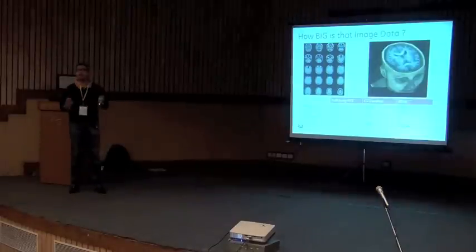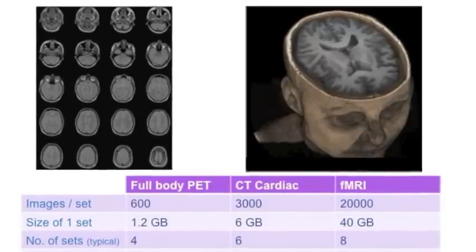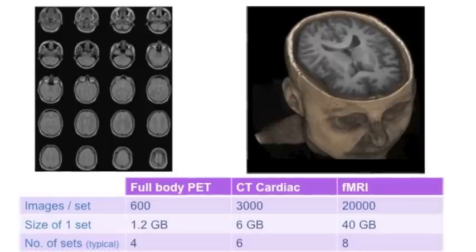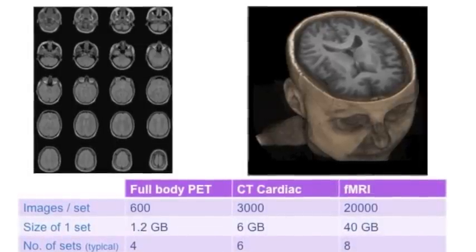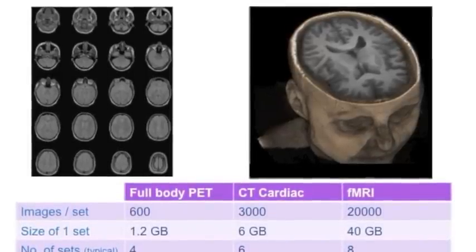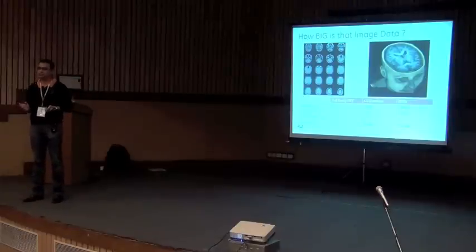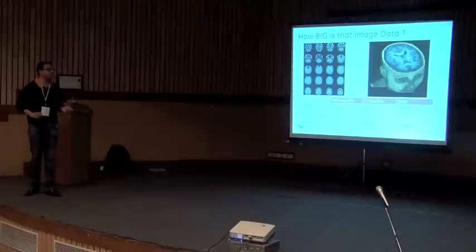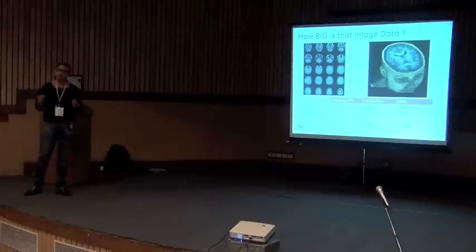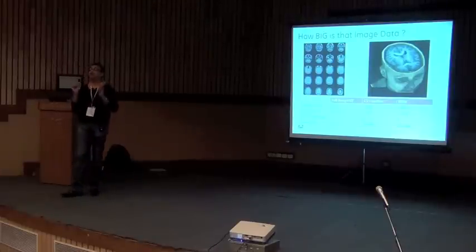These are individual slices - pictorial representation. If you cut off the head and look from the top, this is what it looks like - your gray matter. How big are these data sets? A cardiac CT scan can have 3,000 images per set. Size of one data set is about 6GB. For one exam - one person goes to the hospital one day - it can multiply up to 36GB. This is the size of data we're talking about for one person.